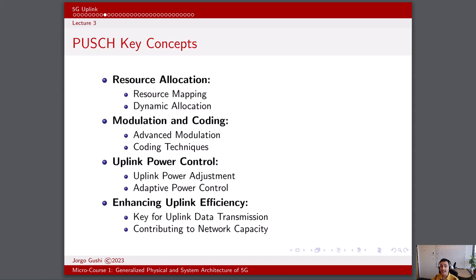Uplink power control is crucial for maintaining consistent and optimal signal quality. Devices adjust their transmission power based on the network's feedback to ensure the received signal strength at the base station is neither too weak nor too strong. Uplink power control operates dynamically, adapting to changes in channel conditions and network load. The efficient operation of PUSCH directly contributes to network efficiency and capacity, and optimized resource allocation, modulation and coding, and power control enhance the network's capacity to accommodate a larger number of users and deliver higher data rates.